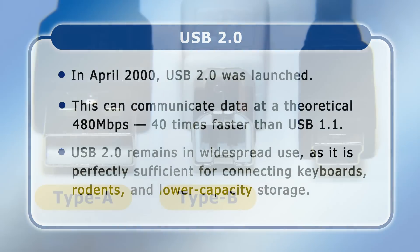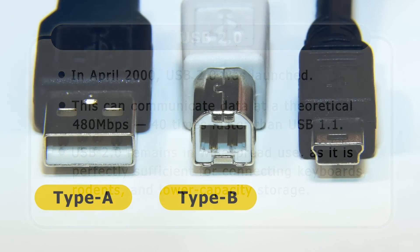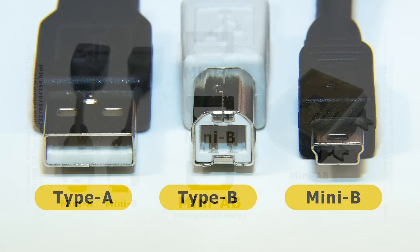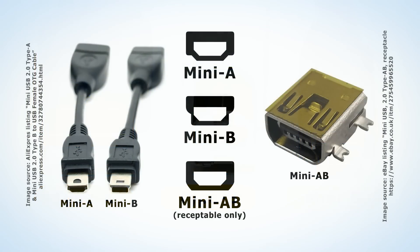In October 2000, the range of USB connectors was expanded with the specification of Mini B plugs and sockets. These were introduced to allow USB connectors to be included on phones, cameras, media players, and other mobile devices, some of which remain in use today. For use on host devices rather than peripherals, a Mini A connector was later specified along with a Mini AB socket that could accept both Mini A and Mini B plugs.